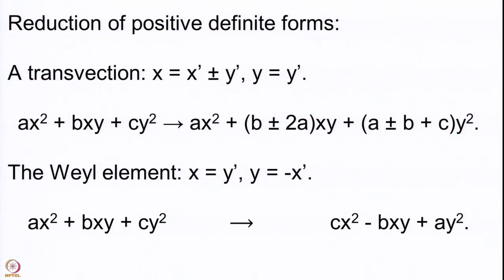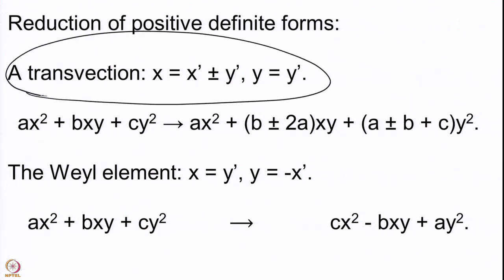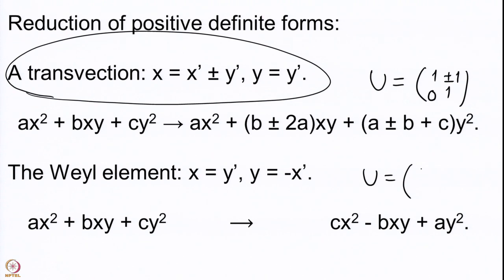Before we go to the main proof, let me quickly recall the two very important transformations we have introduced. The first one is called a transfection, represented by the matrix whose diagonal entries are 1, the upper diagonal entry can be plus or minus 1, and the lower diagonal entry is 0. The second is the Weyl element, represented by the matrix with entries 0, 1, minus 1, 0.